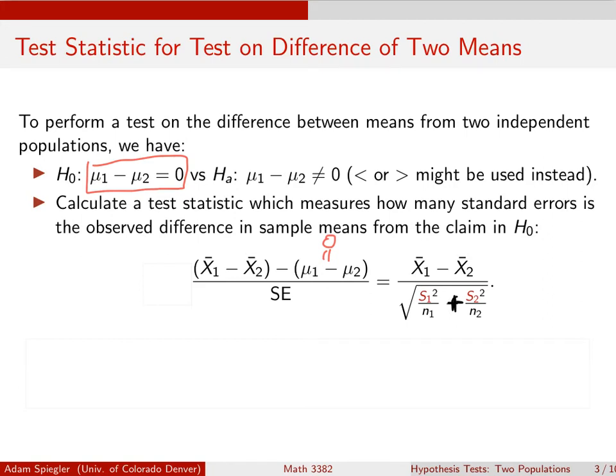So now we're going to take the difference and divide it by the square root of the standard deviation of sample one squared over the size of sample one plus the standard deviation of sample two squared divided by the size of sample two.